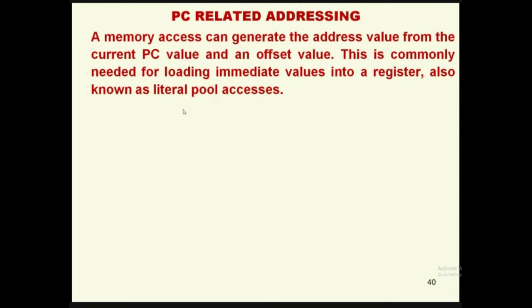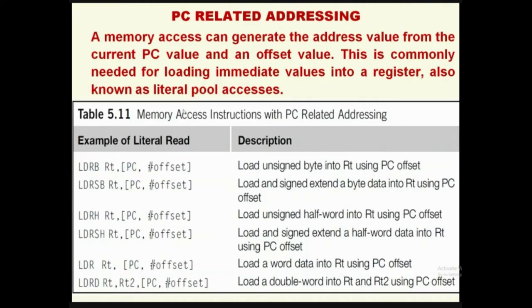PC-relative addressing: R0 to R15 are the 16 registers available; R15 is the program counter. Memory access can generate an address value from the current PC value and an offset value. This is commonly needed for loading immediate values into a register, also known as literal pool access. Table 5.11 gives memory access instructions with PC-relative addressing — loading unsigned byte, signed byte, unsigned and signed 16-bit, 32-bit, and 64-bit all using PC as a pointer with an offset.